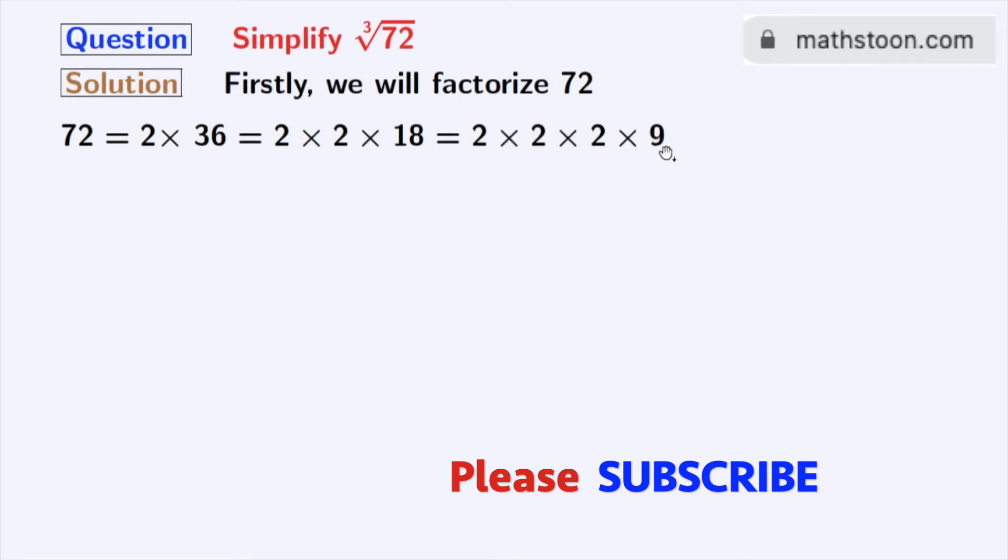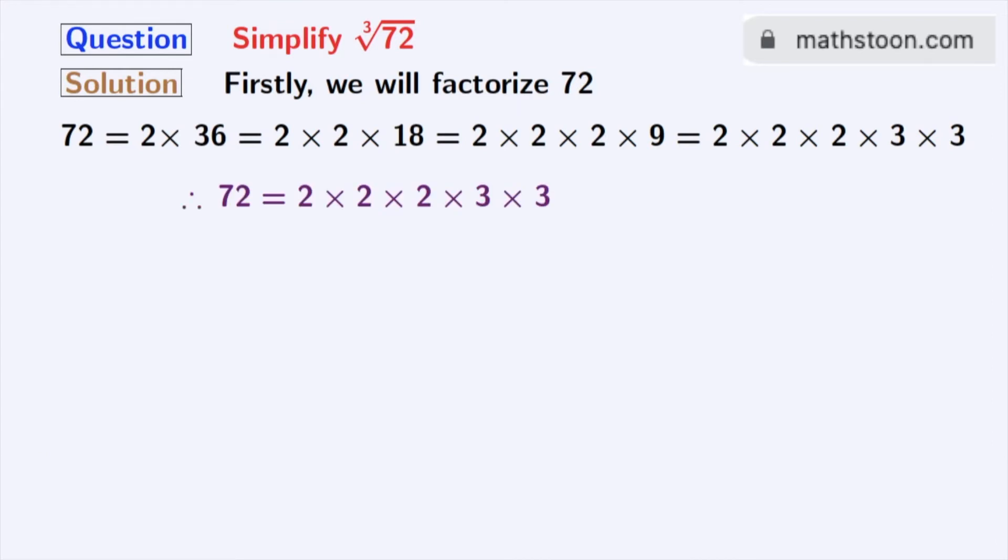And we all know that 9 is equal to 3 times 3. Now look that all these numbers here are prime numbers, so we cannot factorize further. So finally we get 72 is equal to 2 times 2 times 2 times 3 times 3.